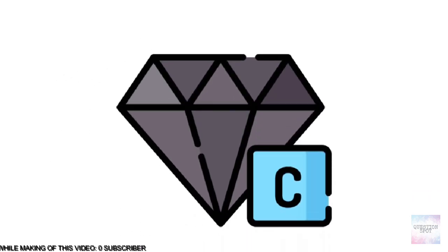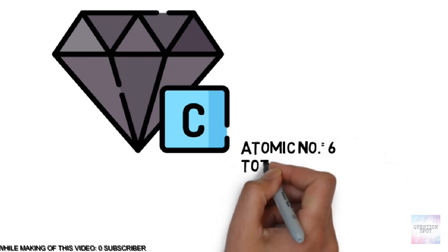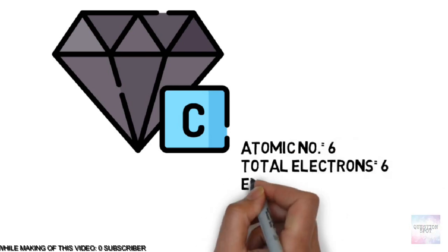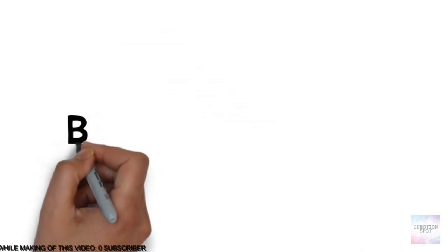Now in the case of carbon, it has atomic number 6. Thus it contains 6 electrons, therefore there are 4 electrons in the last orbit of the carbon atom.